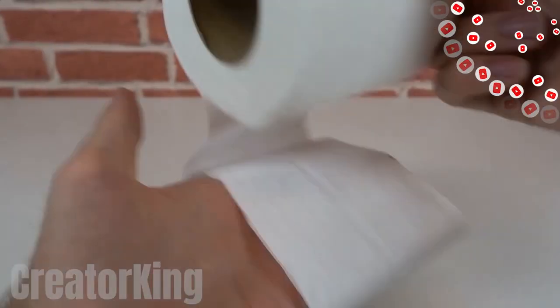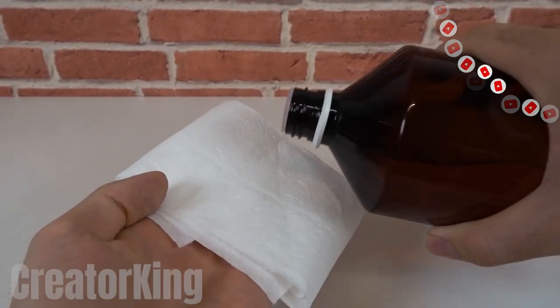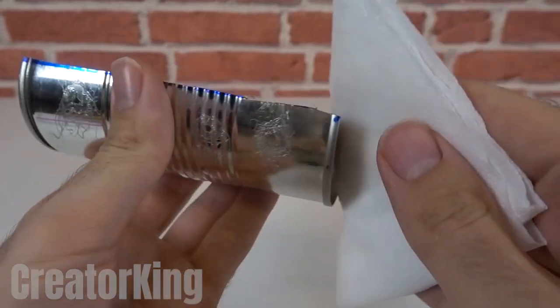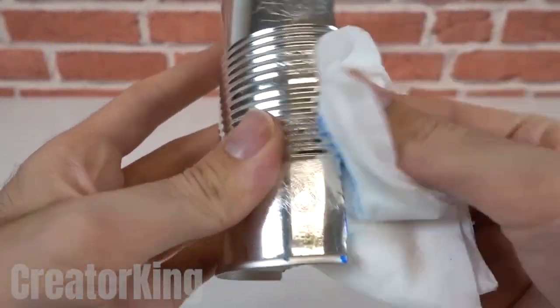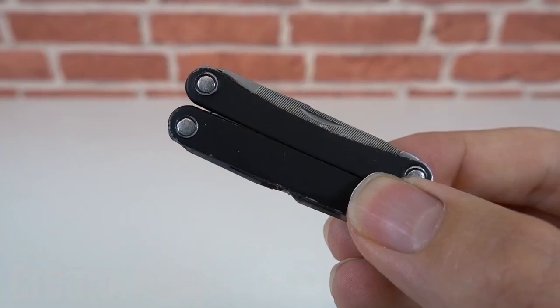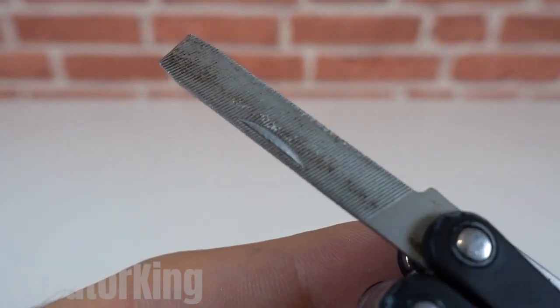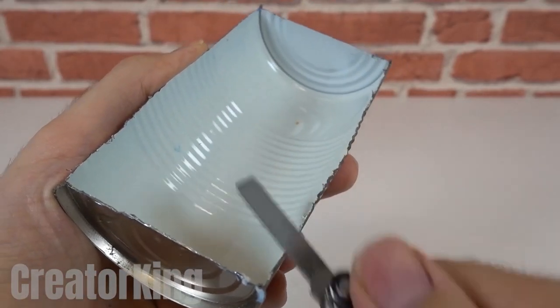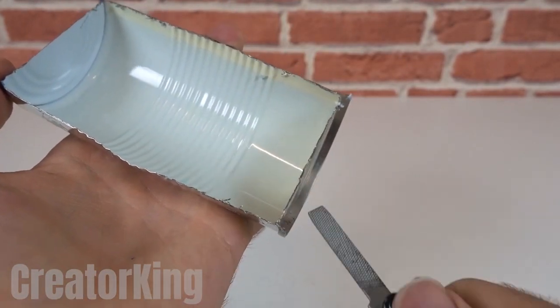Once we have cut the can and emptied its contents, proceed to clean it with some toilet paper and solvent to remove all the marker residues along with that nasty little juice that mushrooms have. Find a nail file and use it to smooth the edges of both sides of the can to avoid cutting yourself.